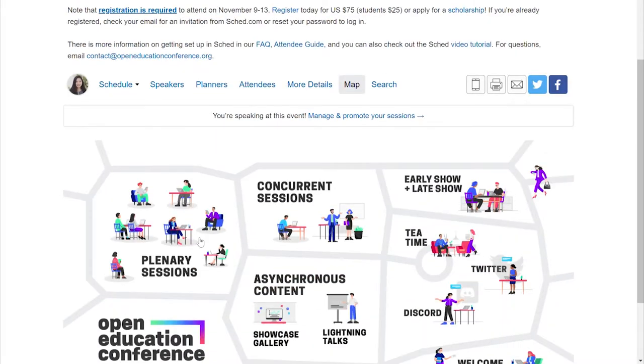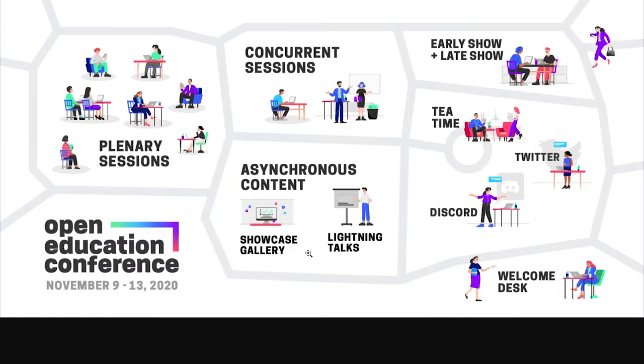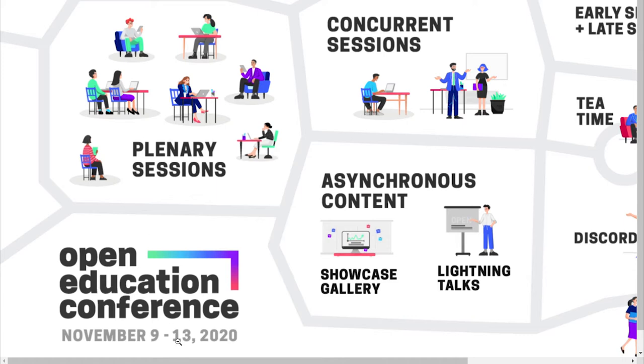We'll start with the virtual venue map. As you can see, our virtual conference space has a few categories. The program itself is organized into three parts.